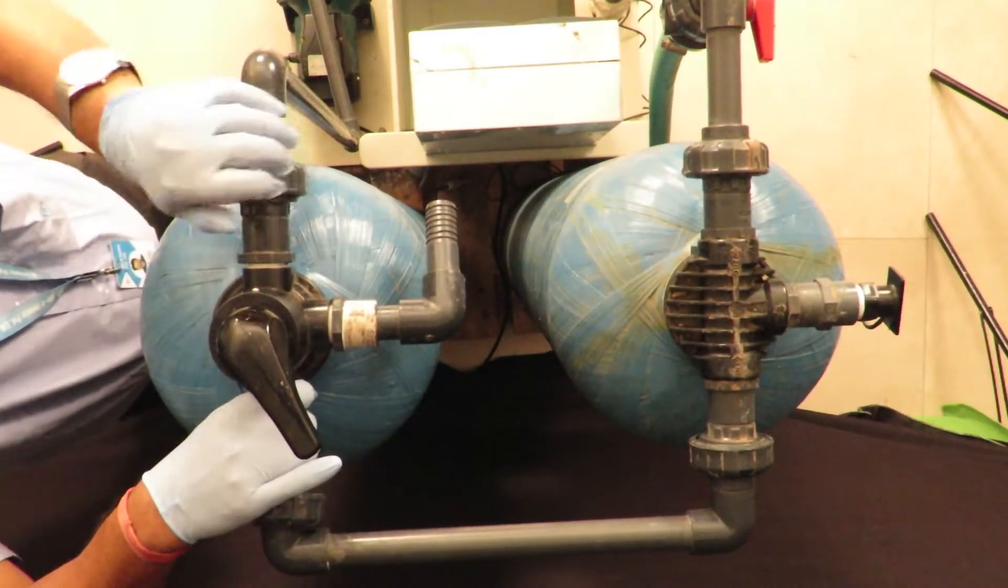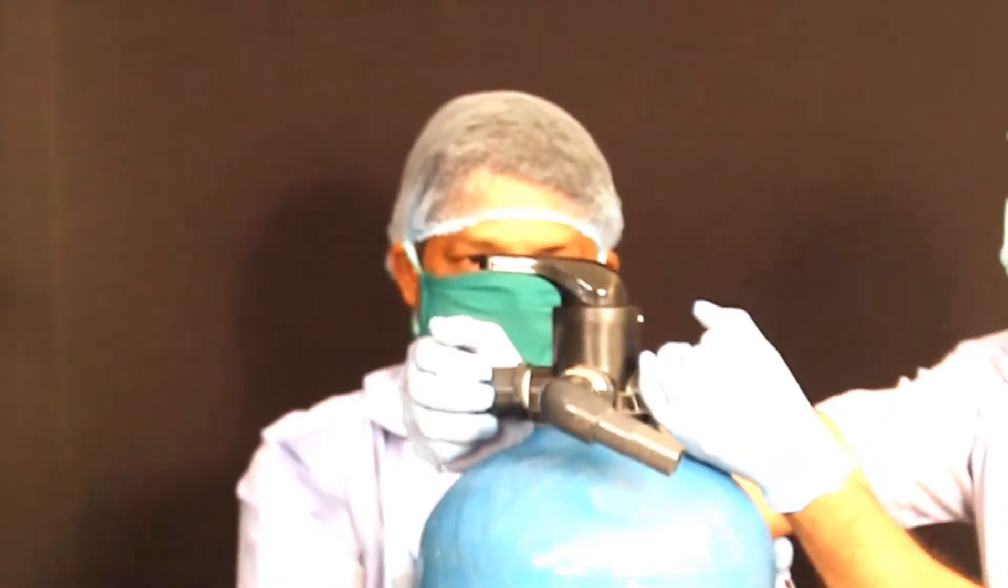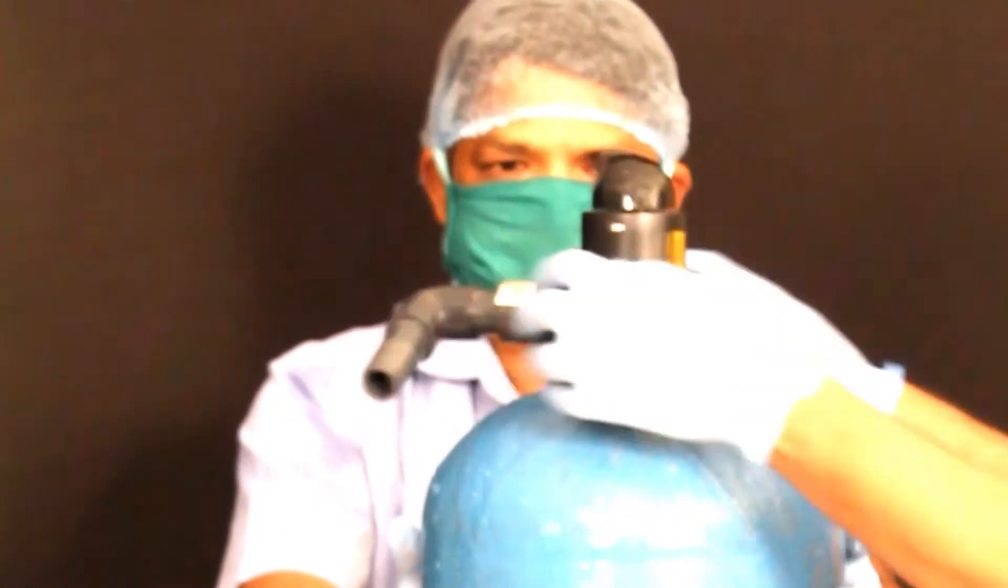Remove the connections to the carbon tank from the DM plant. Now remove the carbon cylinder upper cap.